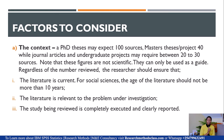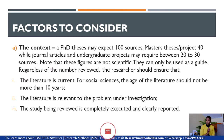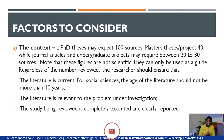Regardless of the number that you are going to review, the researcher should ensure: one, the literature is current — for social science research, the age of the literature should not be more than 10 years unless you are dealing with classical materials; two, ensure that the literature is relevant to the problem under investigation; and three, that the study being reviewed is completely executed and clearly reported, so that you will be able to critically and objectively review it.